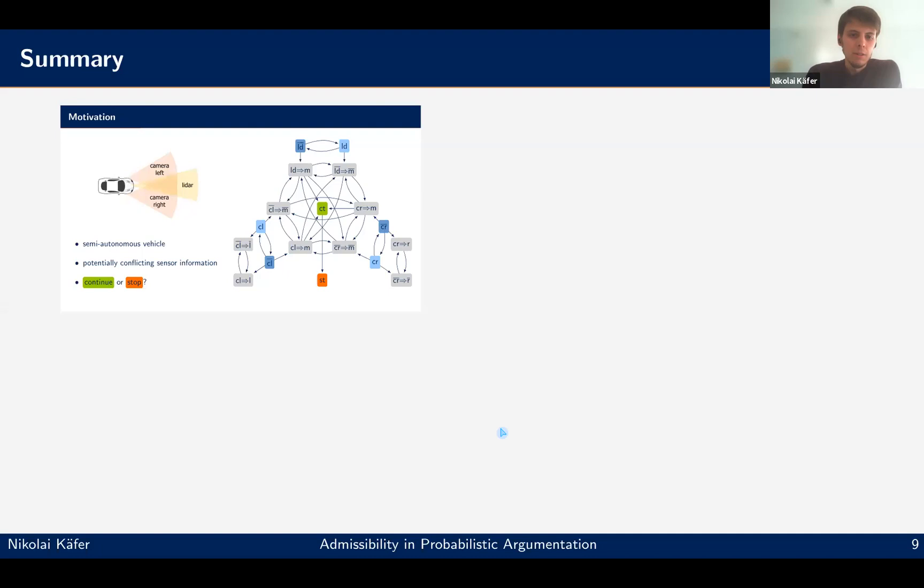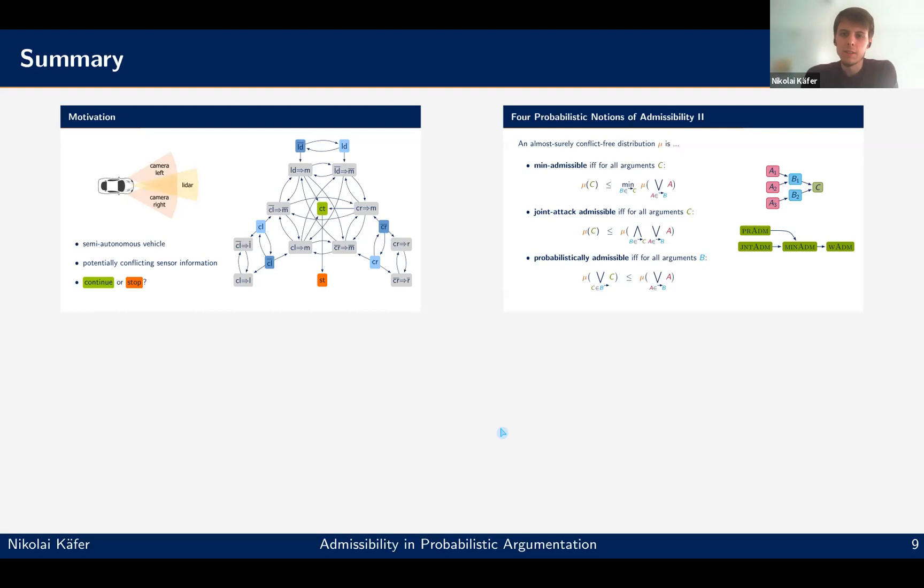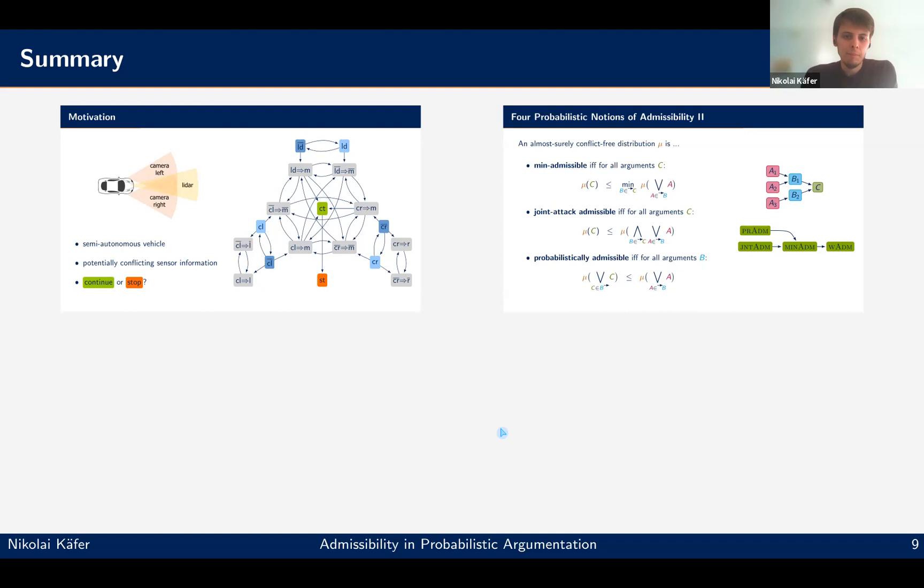So in summary, I showed you here some not completely trivial example to motivate also the probabilistic aspects of argumentation. I showed you four different but related notions of how to capture admissibility in the probabilistic setting. We provide here some overview. And yes, of course this tool, which is also helpful just to get the feeling for the different semantics and play a bit around with this. So thank you for your attention. And I'm happy to answer my short question now, if you have the time, and welcome you in the poster session. Thank you.